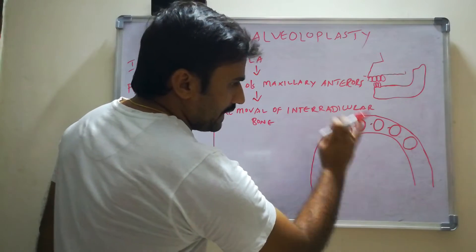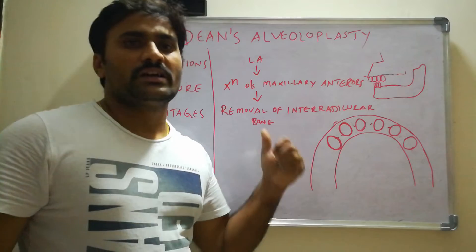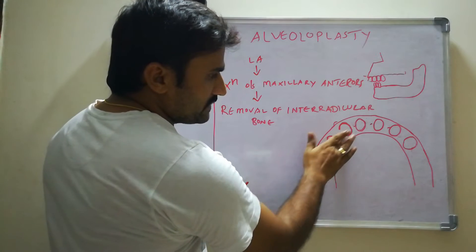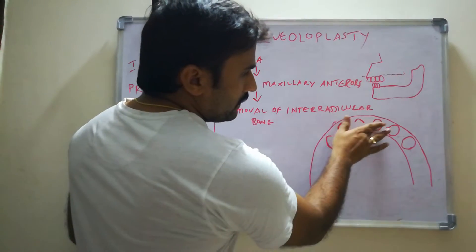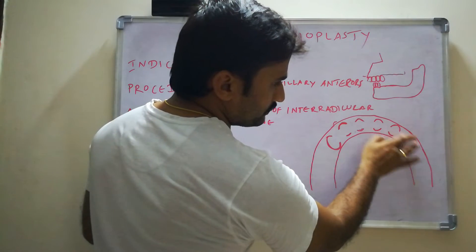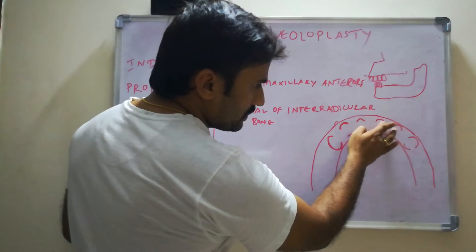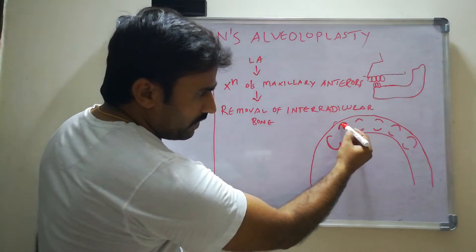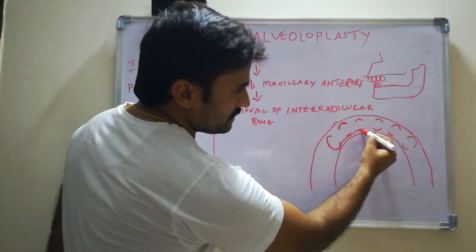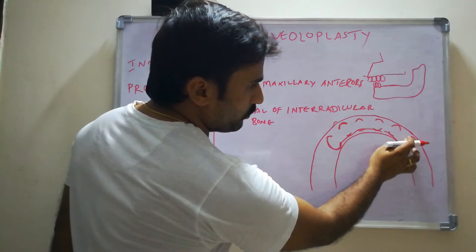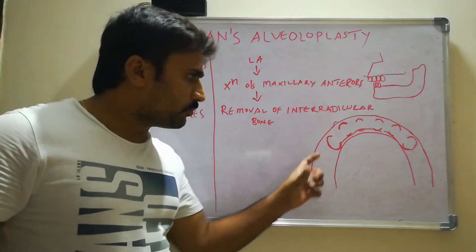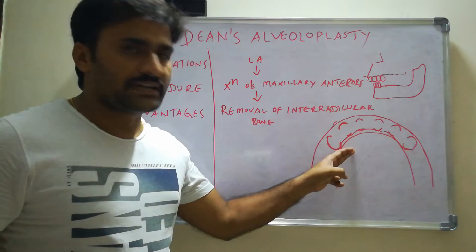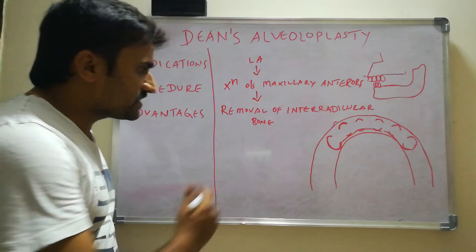After removal of the interradicular bone, all the sockets will merge, and we will see a large groove. There is no bone between the sockets. So we have only the labial cortical plate and the palatal cortical plate.